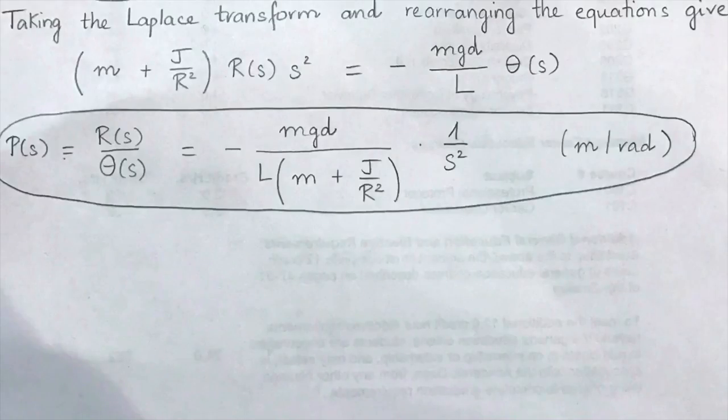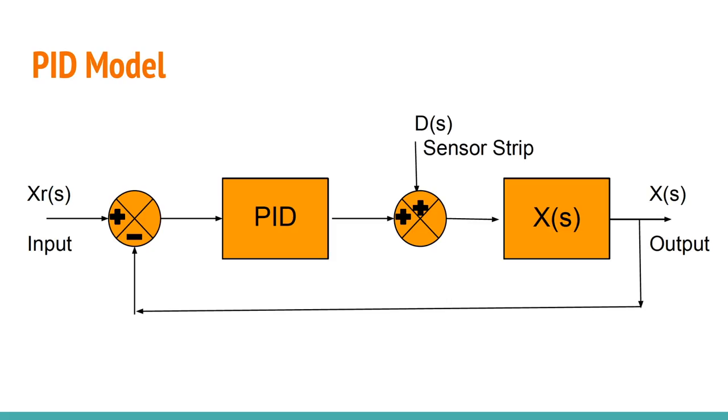Here are the equations of motion. Taking the Laplace transform and rearranging the equation gives the transfer function. Here is the PID block diagram. Xr(s) is the input of our system, and in this case it's the rotary potentiometer, the dial we set to the distance we'd like our ball to go. X(s) is the output, and this is the actual location of our ball.